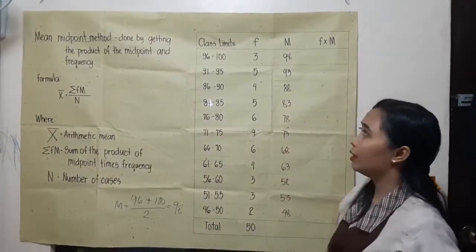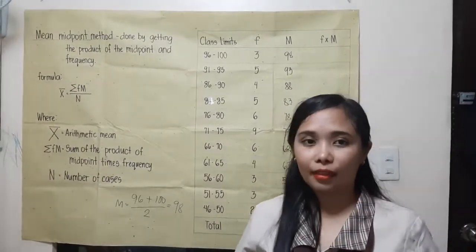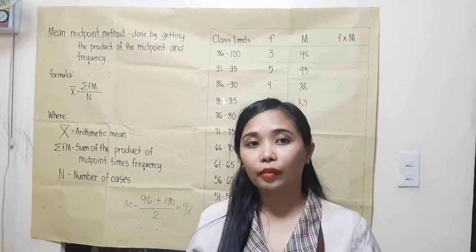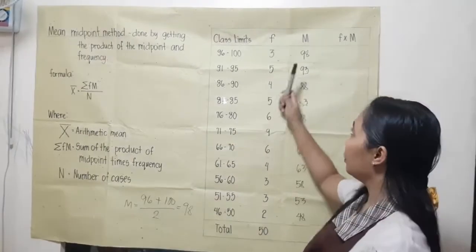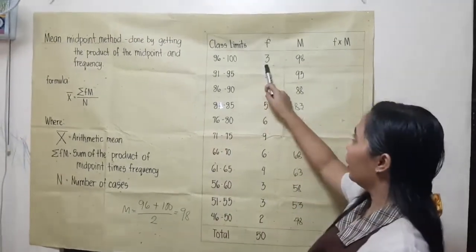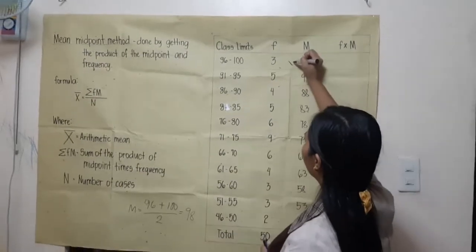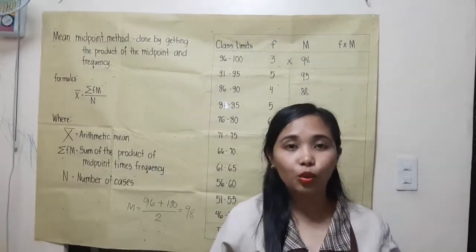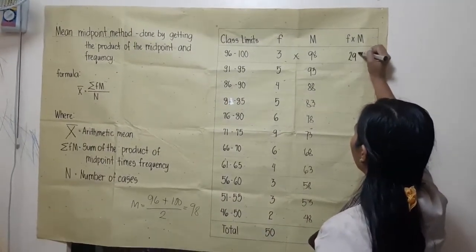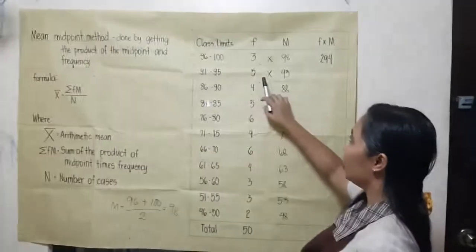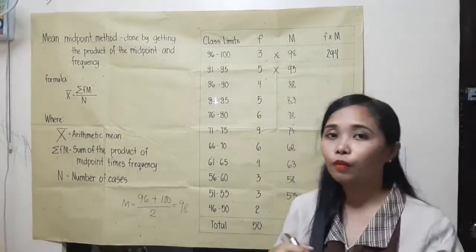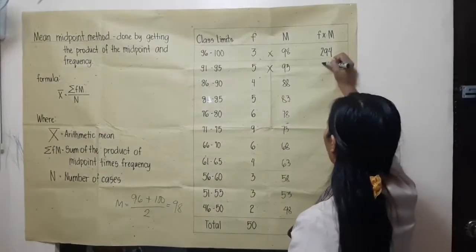I already wrote the midpoint of all class limits. Our next step is to get the summation of the midpoint and frequency. We need to multiply the midpoint by its corresponding frequency. For example, 3 times 98 equals 294. Again, frequency multiplied by the midpoint: 5 times 93 equals 465.